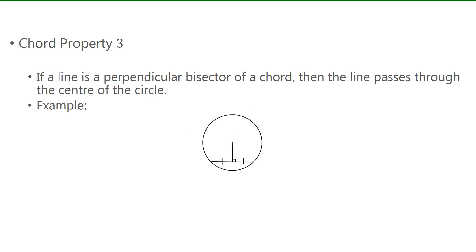Now the last chord property says that if a line is a perpendicular bisector of a chord, then it must pass through the center of the circle. So if this is our chord, and this one here is the perpendicular bisector, because it's 90 degrees and it cut in half, then if I extend this line, at some point it must pass through the center of the circle.